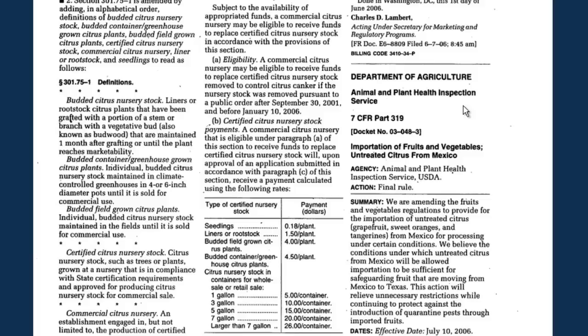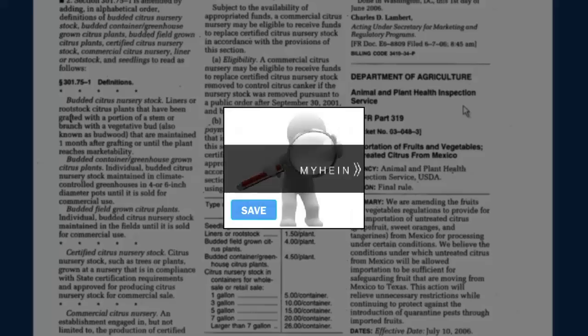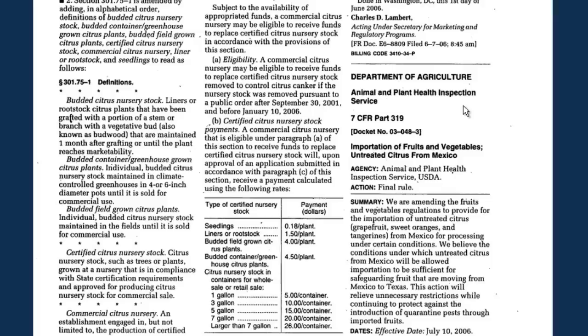Now that we have this final rule up, we next want to identify the key pieces of legislation leading up to this final rule, and also the final codification in the CFR after the amendments were put in place. Along the way, we could write down all of these findings on a piece of notebook paper, or we could use MyHein, which is an electronic research organization service — free to all HeinOnline users.